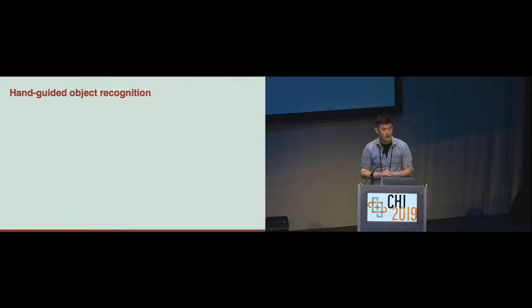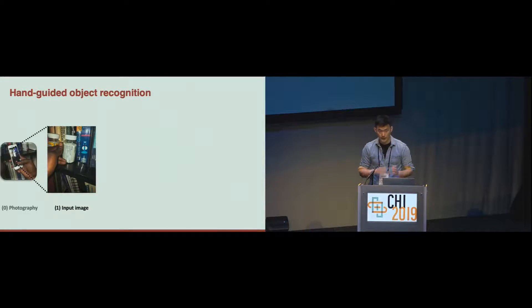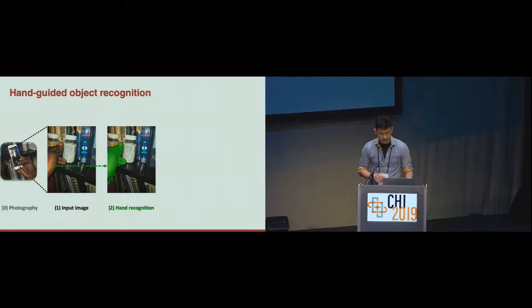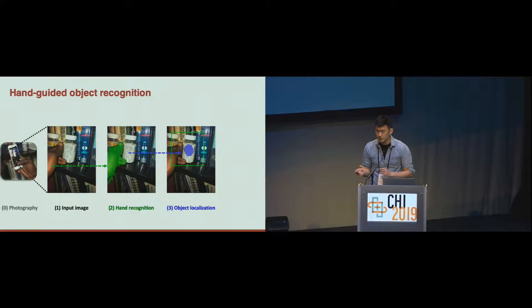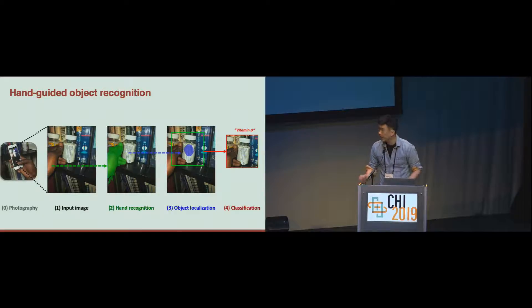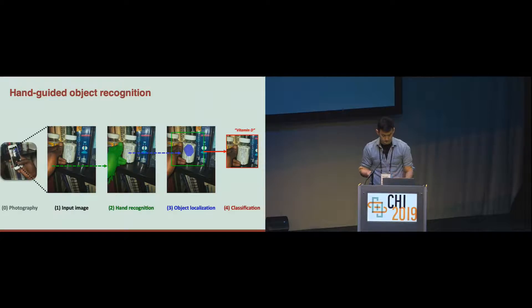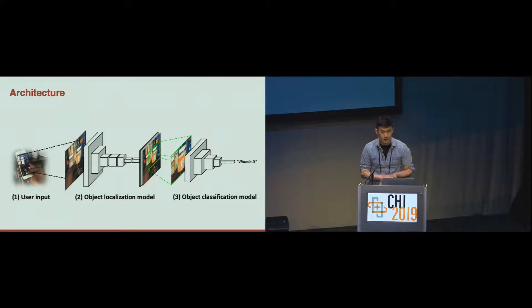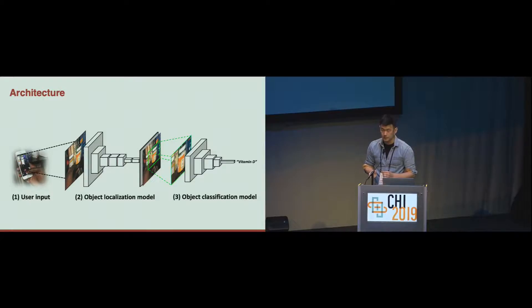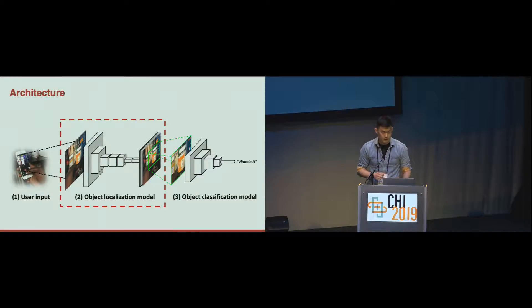In this hand-guided object recognition system, once a user takes a photo including both hand and object, the system first recognizes the hand, then localizes the object of interest based on hand information such as hand pose and location, and then crops the object from the image and uses it for classification. Our system consists of two different deep learning models: one is the object localization model, and the other is the object classification model. Let's first take a look at the object localization model.